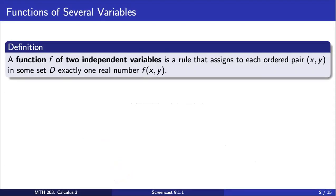A function f of two independent variables is a rule that assigns to each ordered pair (x, y) in some set d, exactly one real number f.